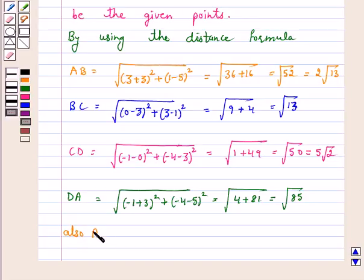Also AC is equal to square root of (0+3)² + (3-5)². This is equal to 9 + 4. This is equal to square root of 13.